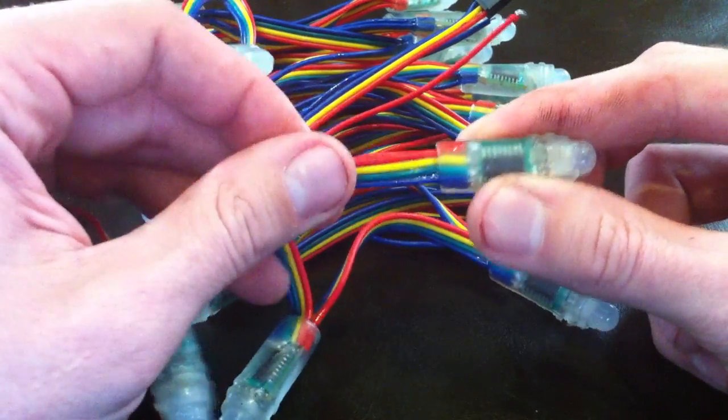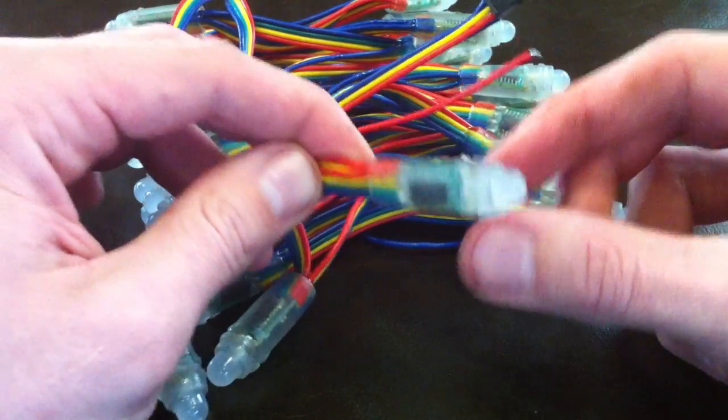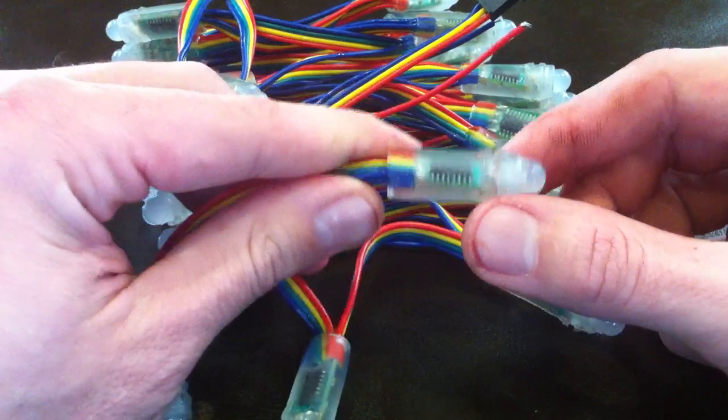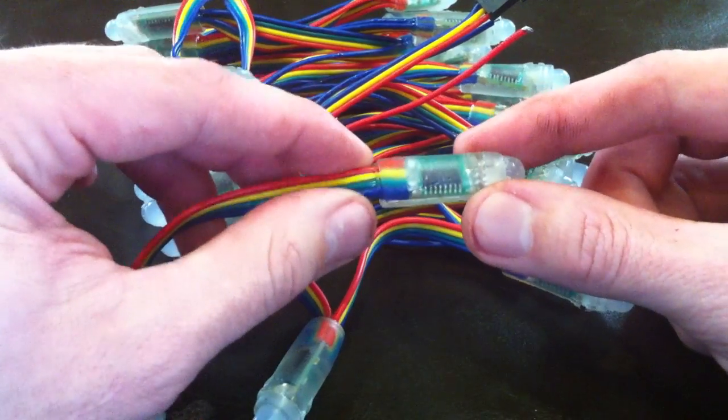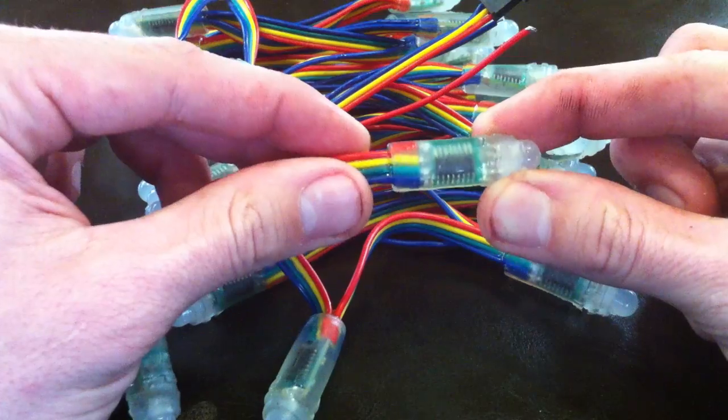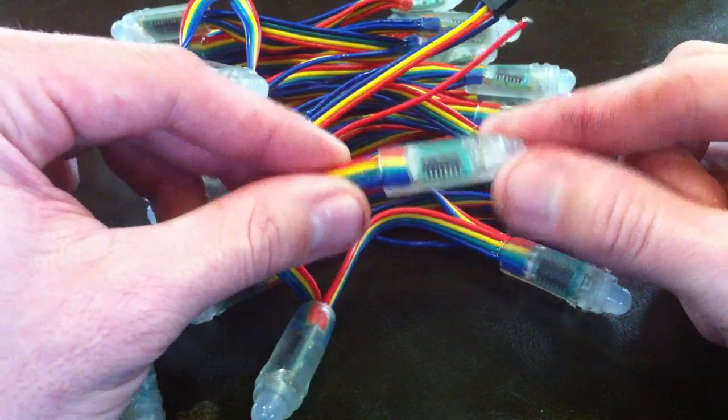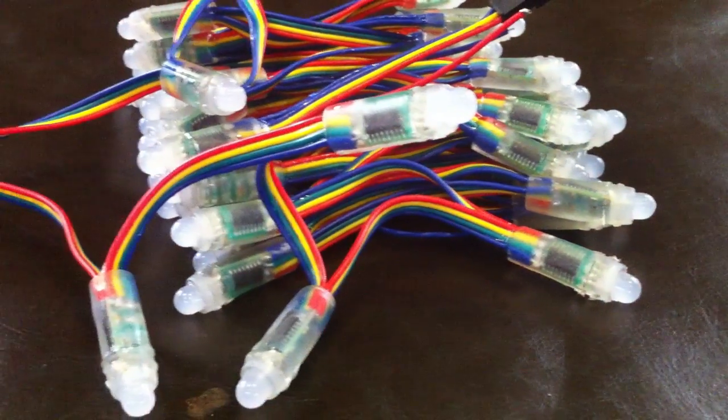So just two things to look for if you're looking at pixel nodes or pixel strings for next year: make sure that you're getting the newest iteration of these, the ones that have some of those waterproofing issues addressed. So that's it, thanks everyone.